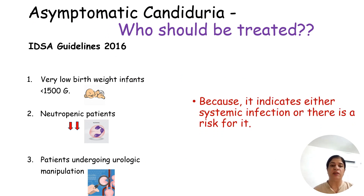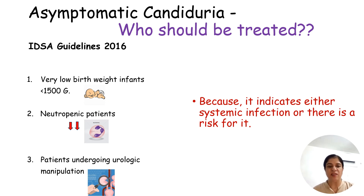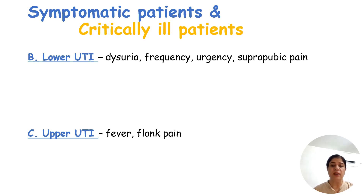Who should be treated in asymptomatic candiduria? The IDSA guidelines of 2016 provide recommendations for three scenarios: very low birth weight infants, neutropenic patients where there can be seeding of kidneys from invasive candidiasis, or patients who are colonized and are proposed for urologic manipulation or surgery — where Candida from a local site can invade the bloodstream. In these three scenarios, treatment should be given.